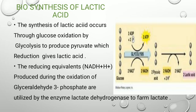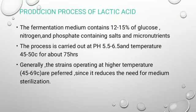In glycolysis, two molecules of ATP are produced and NAD+ is reduced to form two NADH. Glyceraldehyde-3-phosphate is utilized by the enzyme lactate dehydrogenase to form lactate. The two molecules of pyruvic acid are then converted to two molecules of lactic acid. This completes the biosynthesis of lactic acid.